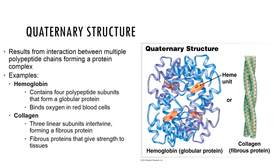Fibrous structural proteins like collagen are strand-like, water-insoluble, and very stable. Globular functional proteins are compact, spherical in shape, water-soluble, and usually have specific functional regions or active groups, like the heme unit shown in the diagram.